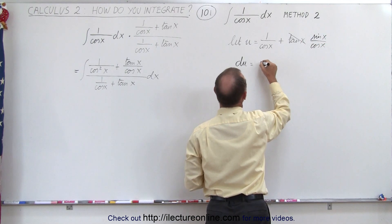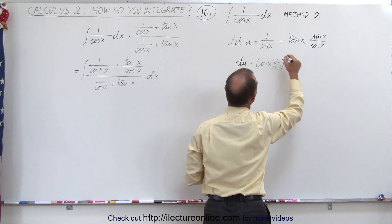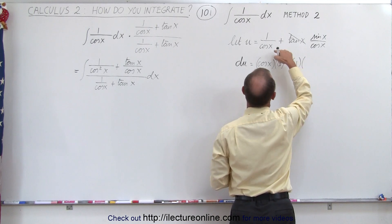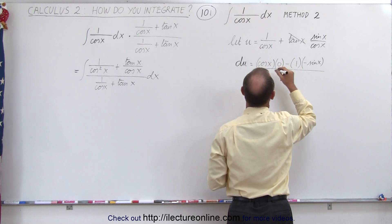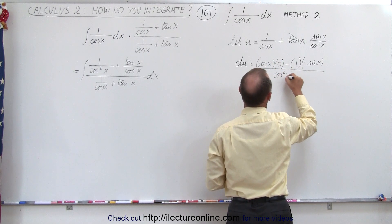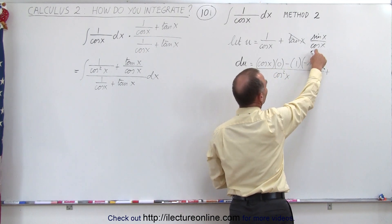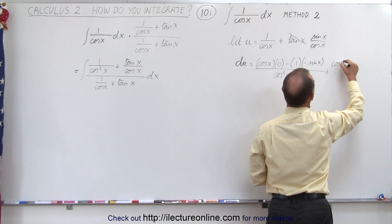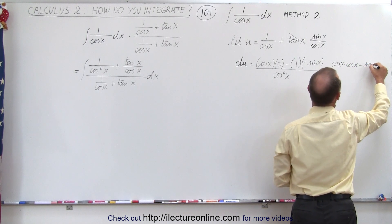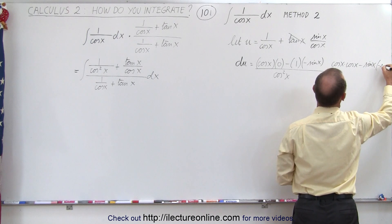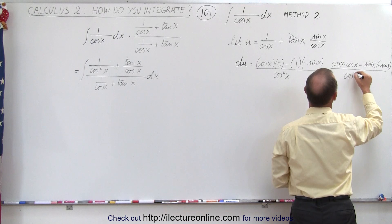When we use the quotient rule, we have the denominator — cosine of x — times the derivative of the numerator, which is 0, minus the numerator times the derivative of the denominator, which is minus the sine of x, all divided by the denominator squared, which is cosine squared of x. Then we take the derivative of the sine of x term: the denominator times the derivative of the numerator — cosine of x — minus the numerator times the derivative of the denominator — minus sine of x — all divided by cosine squared of x.